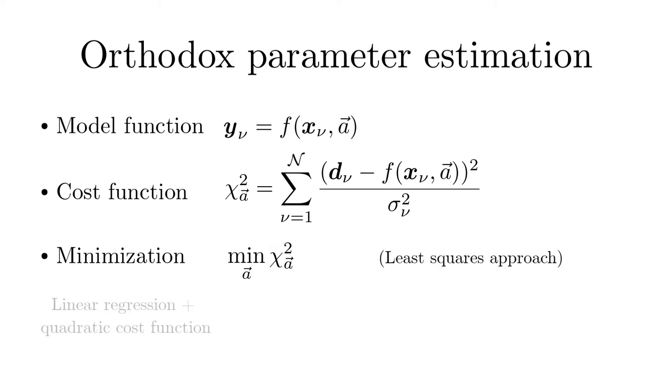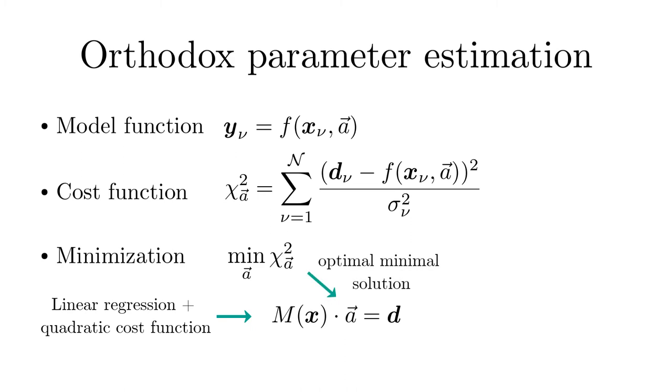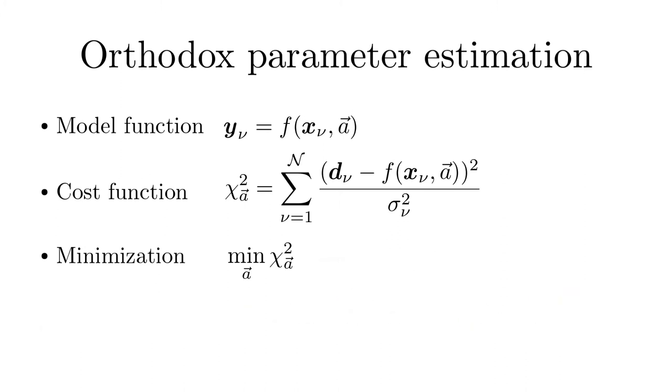In the next step the cost function is minimized with respect to the model parameters. This is the so-called least squares approach. In the case of linear regression in combination with the quadratic cost function the minimization leads to a matrix equation. If one is not entirely sure about the model function, in a final step one can evaluate the model function and discuss whether it has a reasonable behavior.